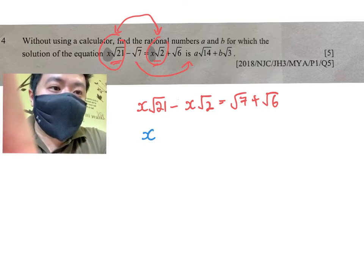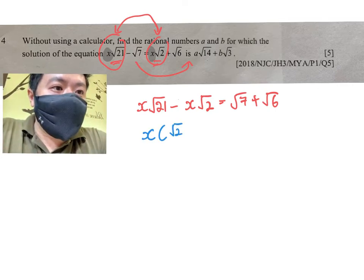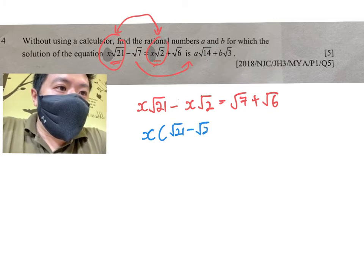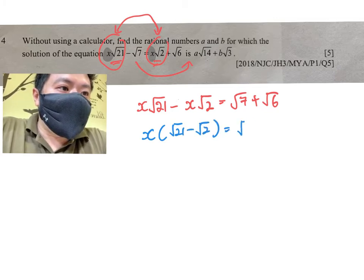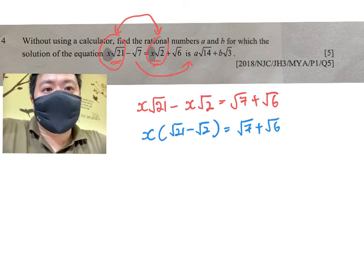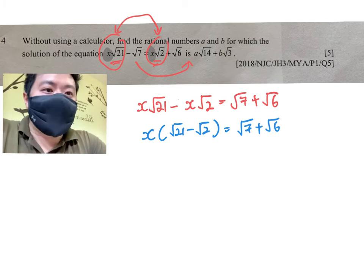The next thing is you basically factorize out your X because you want to make X the subject. Eventually you want to solve for X, so you want X to be the subject. With that, you can actually get your answer out very quickly.